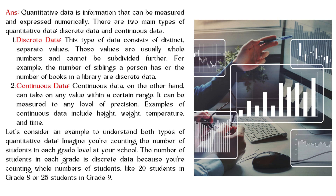Examples of continuous data include height, weight, temperature, and time. To understand both types: imagine you're counting the number of students in each grade level at your school. The number of students in each grade is discrete data because you're counting whole numbers of students — like 20 students in grade 8 or 25 students in grade 9.